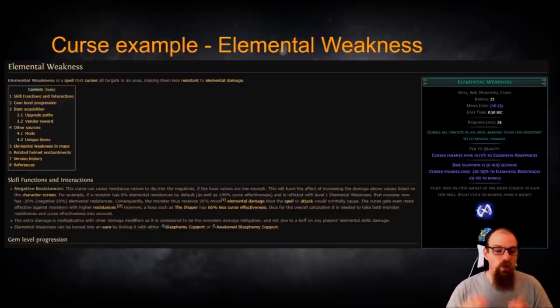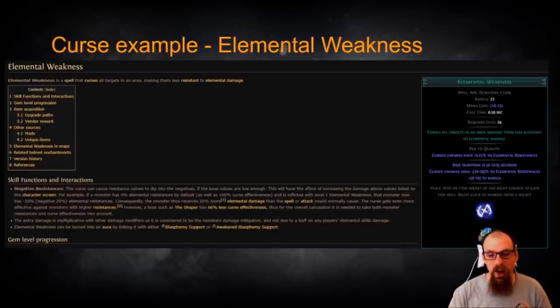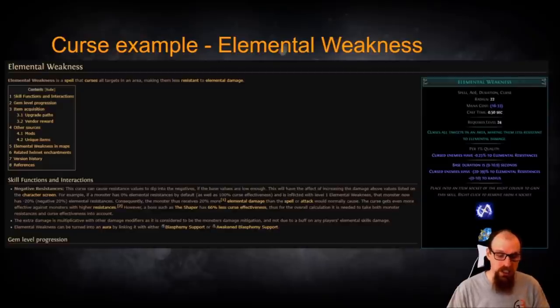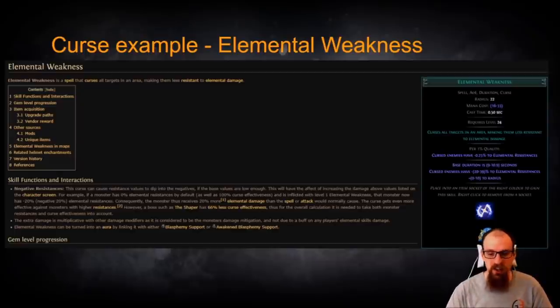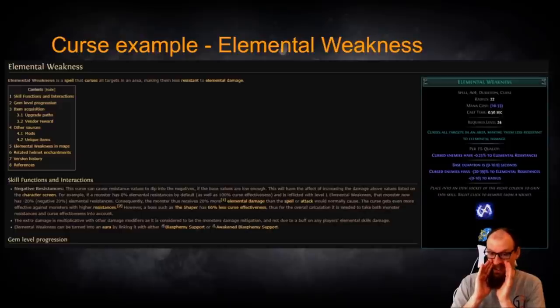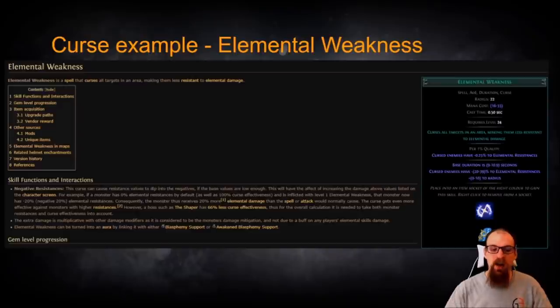This curse can cause resistance's values to dip into the negative if the base values are low enough. This will have the effect of increasing the damage above values listed on the character screen. For example, if a monster has 0% Elemental Resistances by default as well as 100% curse effectiveness which we have way more than that on our particular character and is inflicted with level 1 Elemental Weakness that monster now has negative 20 Elemental Resistances. Consequently, the monster thus receives 20% more Elemental Damage than the spell or attack would normally cause.